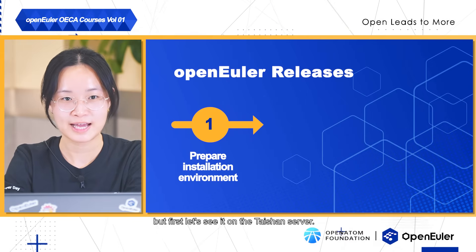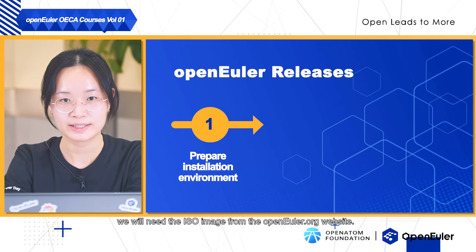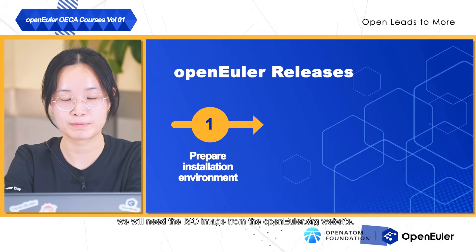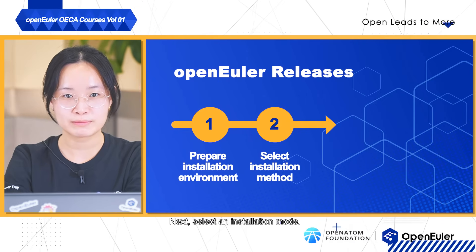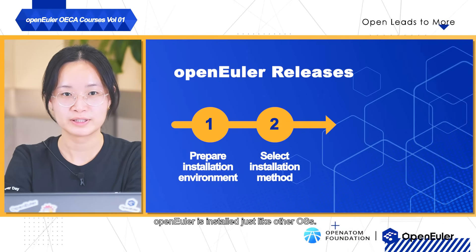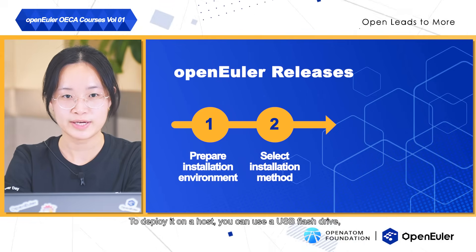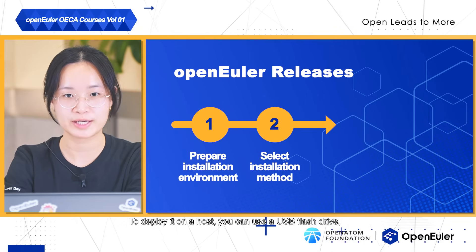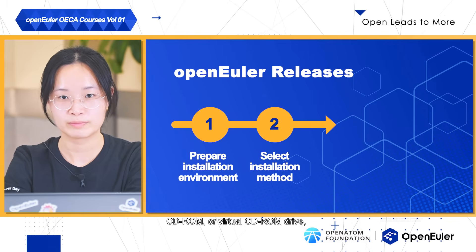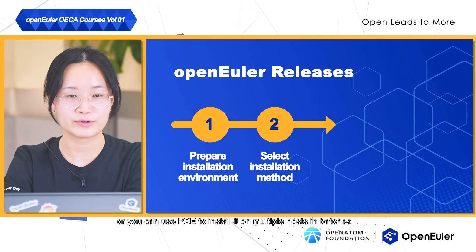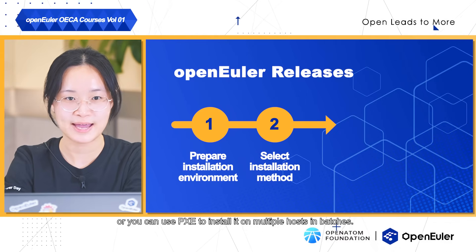But first, let's set up the TaiShan server. Before we start, we will need the ISO image from the openeuler.org website. Next, select an installation mode. OpenEuler is installed just like other OSes. To deploy it on the host, you can use a USB flash drive, CD-ROM, or virtual CD-ROM drive, or you can use PXE to install it on multiple hosts in batches.